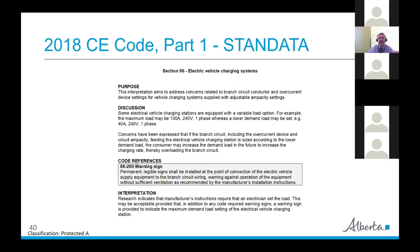We also have a stand data on electric vehicle charging systems. We had a situation where the control systems for these charging stations were arriving where you could set the demand load lower than the maximum — for example, the maximum might be 100 amps at 240 volts single phase, and you could set the demand to 40 amps. The interpretation was that manufacturer's instructions require an electrician to set the load, and this is acceptable provided a warning sign is installed to indicate the maximum demand load setting of the EV charging station.